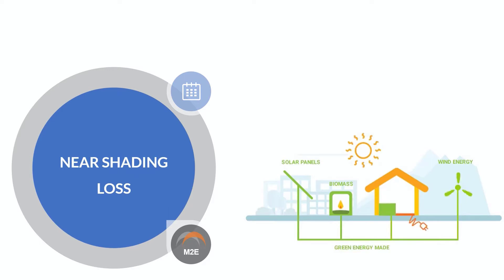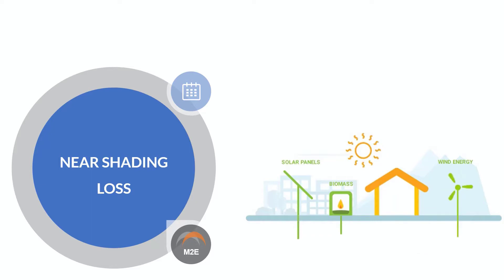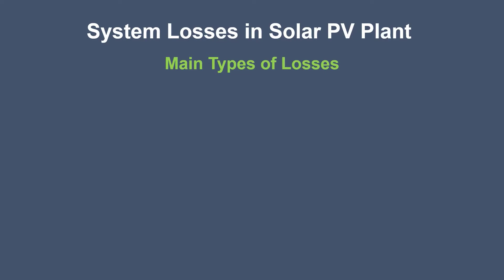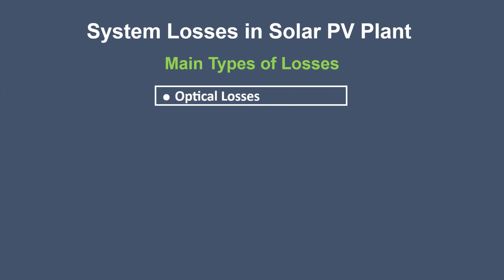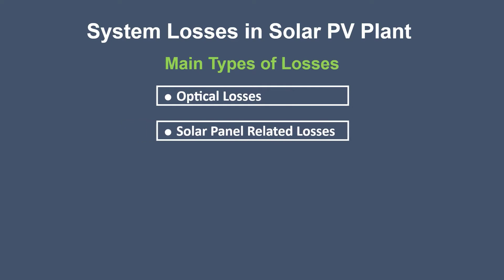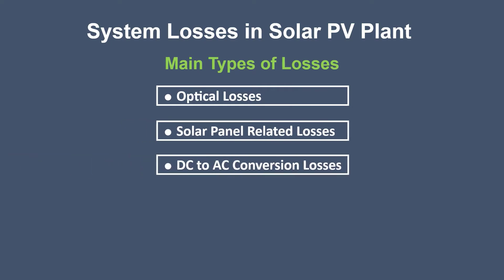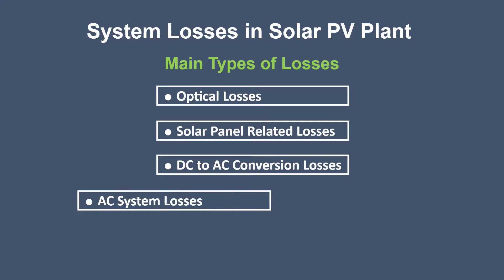Before we begin, allow me to share some important notes with you. We have segmented the losses in solar PV systems into four major categories based on our knowledge, experience, and mostly per industry's acceptance. First is optical losses, second is solar panel related losses, third is the DC to AC conversion losses, and last but not the least is AC system losses.